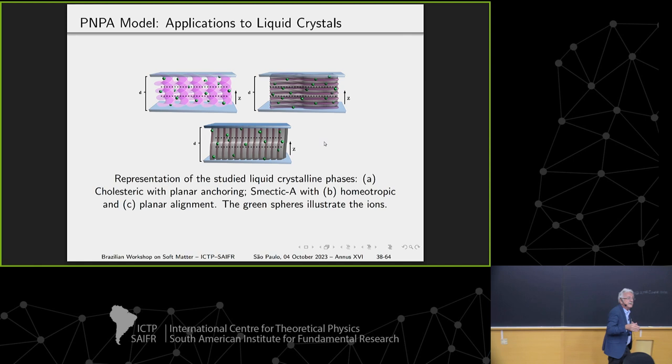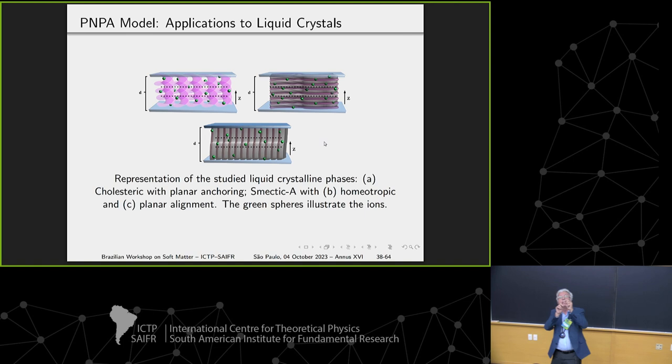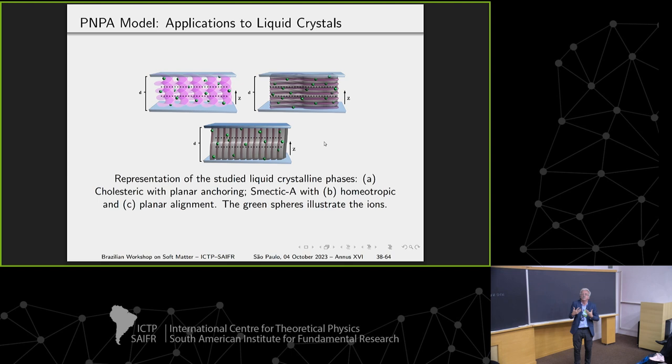This is a problem even in constructing displays. I'm looking for a liquid crystal display here. If you want that pixel to have some properties, you have to apply a precise difference of potential. But if your system applies this potential and there are some ions there, the fields that the molecules feel